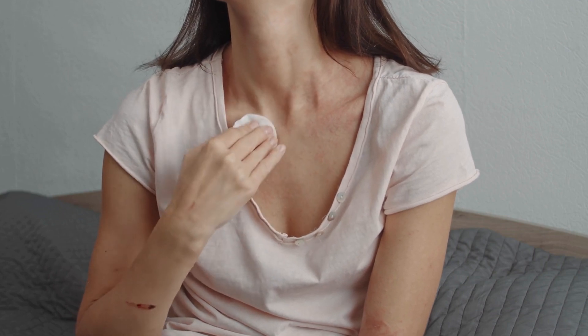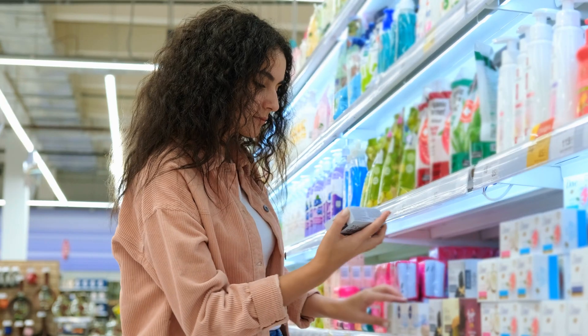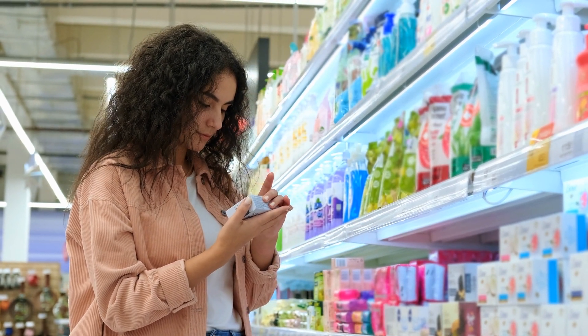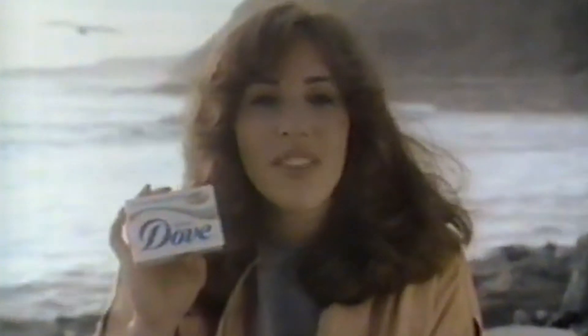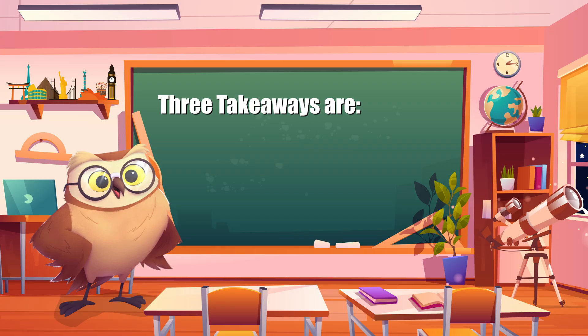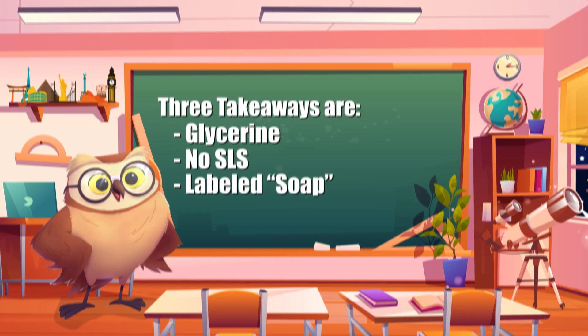It's important to keep in mind that everyone has different reactions to different soaps, but at least now that you know the difference between natural and commercial soaps, you can shop smarter. Regardless of what you decide to use to wash your hands and body, the three takeaways are: it should contain glycerin, it should not contain SLS, and the label should actually say soap.